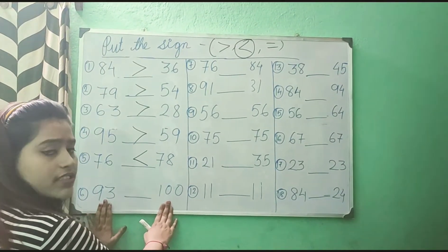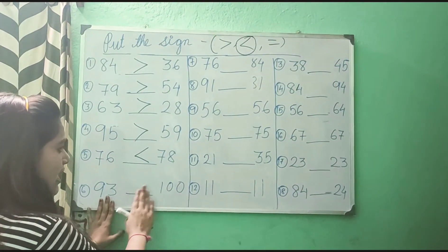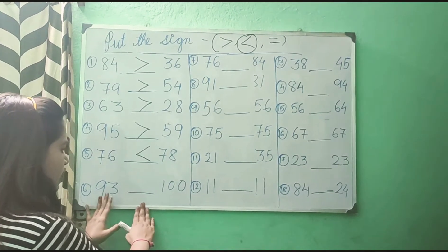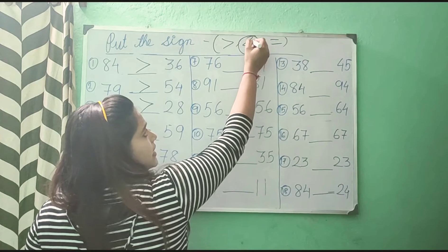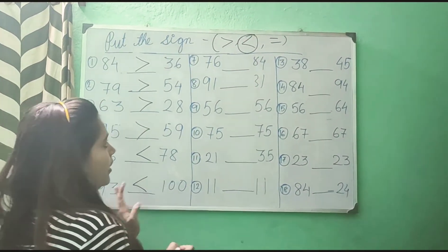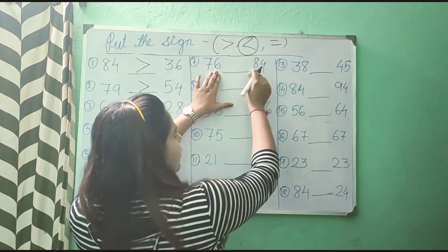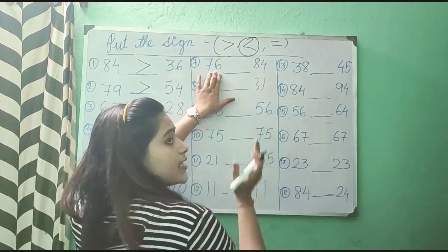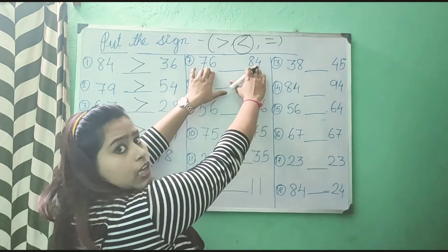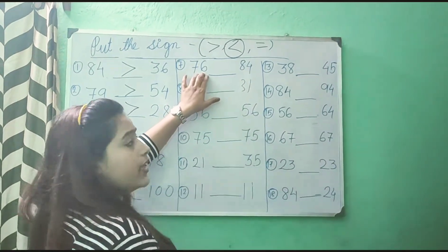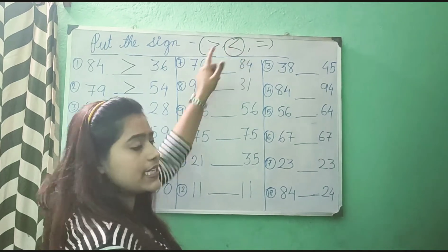93 and 100 — which is the bigger one? 100. So 93 is less than 100, means 93 is smaller than 100, that is why I am putting the less than sign. Now see, 76 and 84 — which is the bigger number? 84. So 76 is the smaller one. This is less than 84, that is why we will put less than sign.